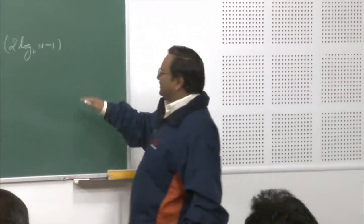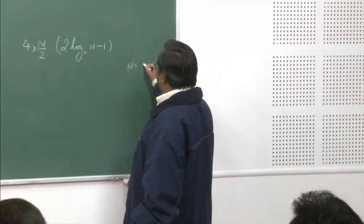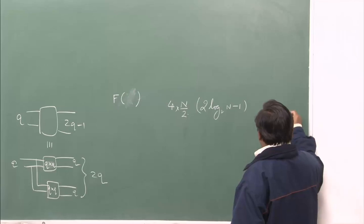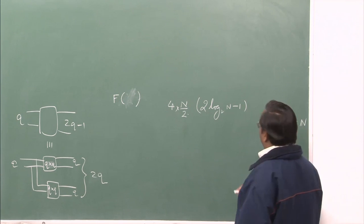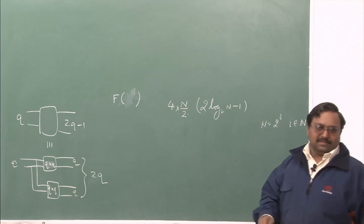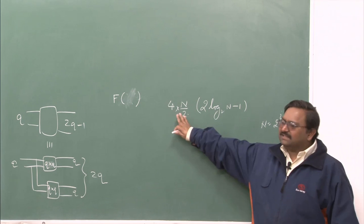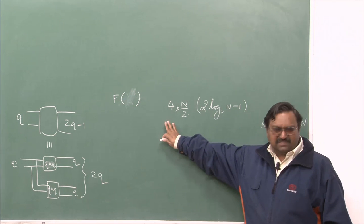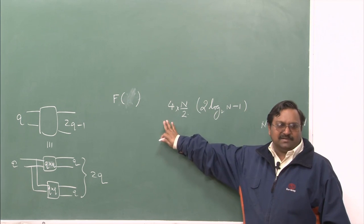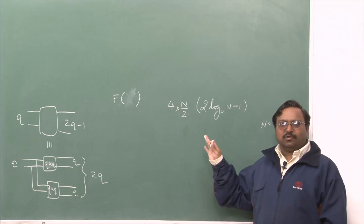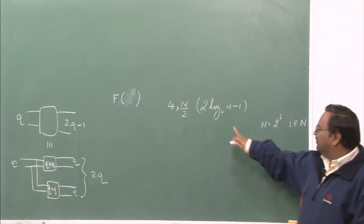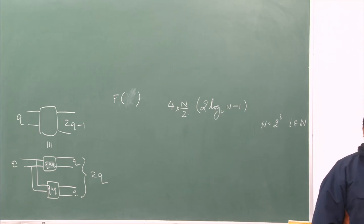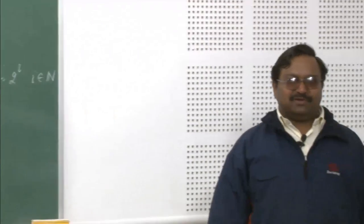This is the total number of switching elements for a rearrangeable non-blocking switch, each requiring 4 cross points — that is the total number of cross points from the flip-and-do-it theorem. This was on the condition that n = 2^something; otherwise I could not arrive at this condition. The log₂ comes because of that, but we know it is going to be logarithmic.